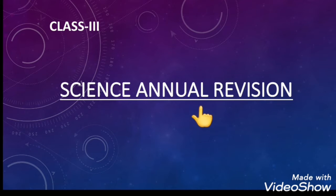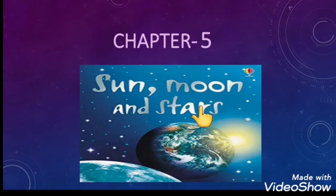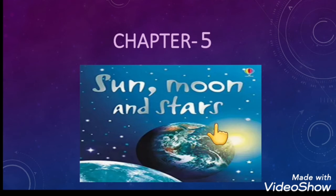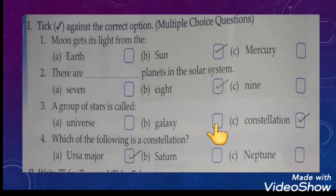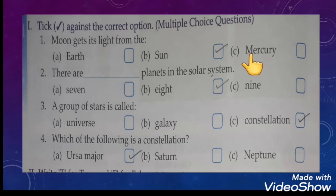Good morning, dear students. In this video we are going to do the science annual revision of chapter number 5, that is the Sun, Moon and Stars. In this video we are going to discuss the book exercise as well as the question answers related to this chapter. First we will discuss the book exercise. We have to tick right against the correct options — three options are given and you have to select one of them.